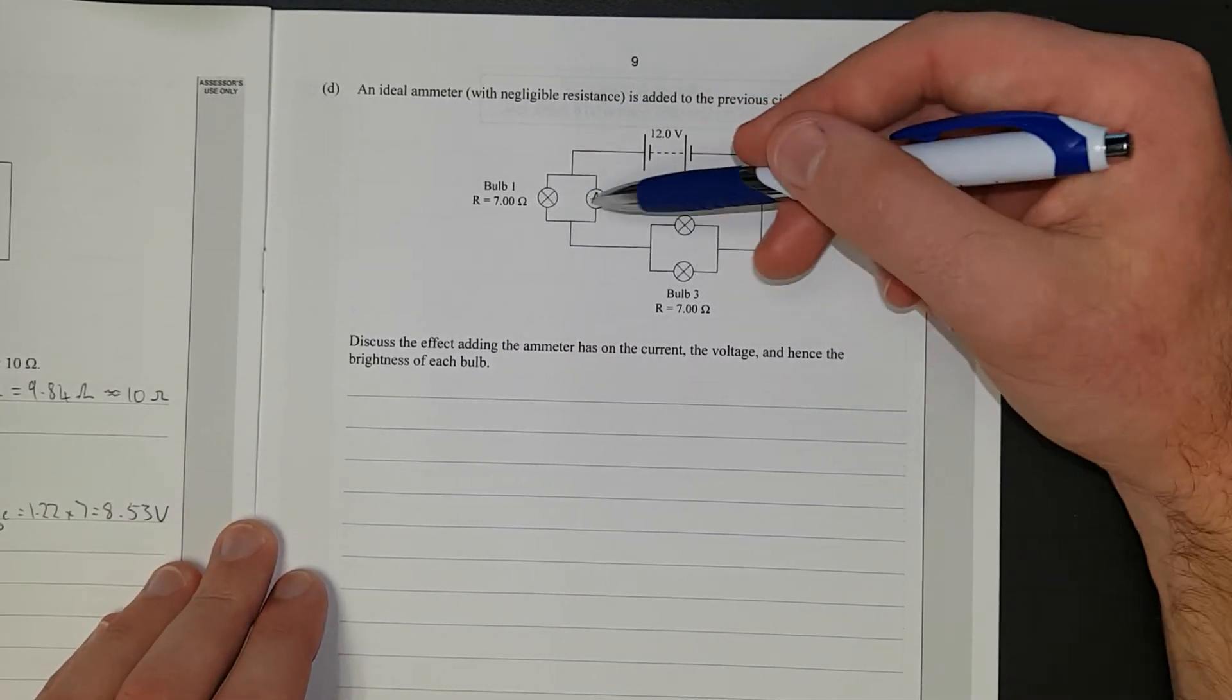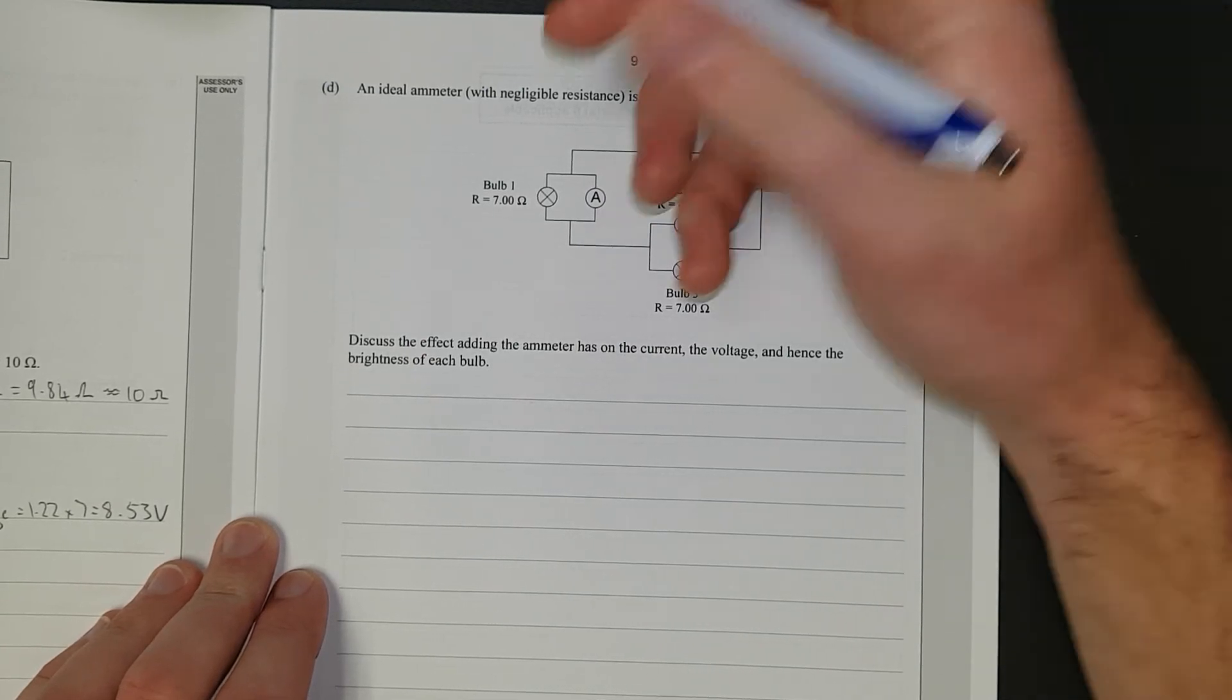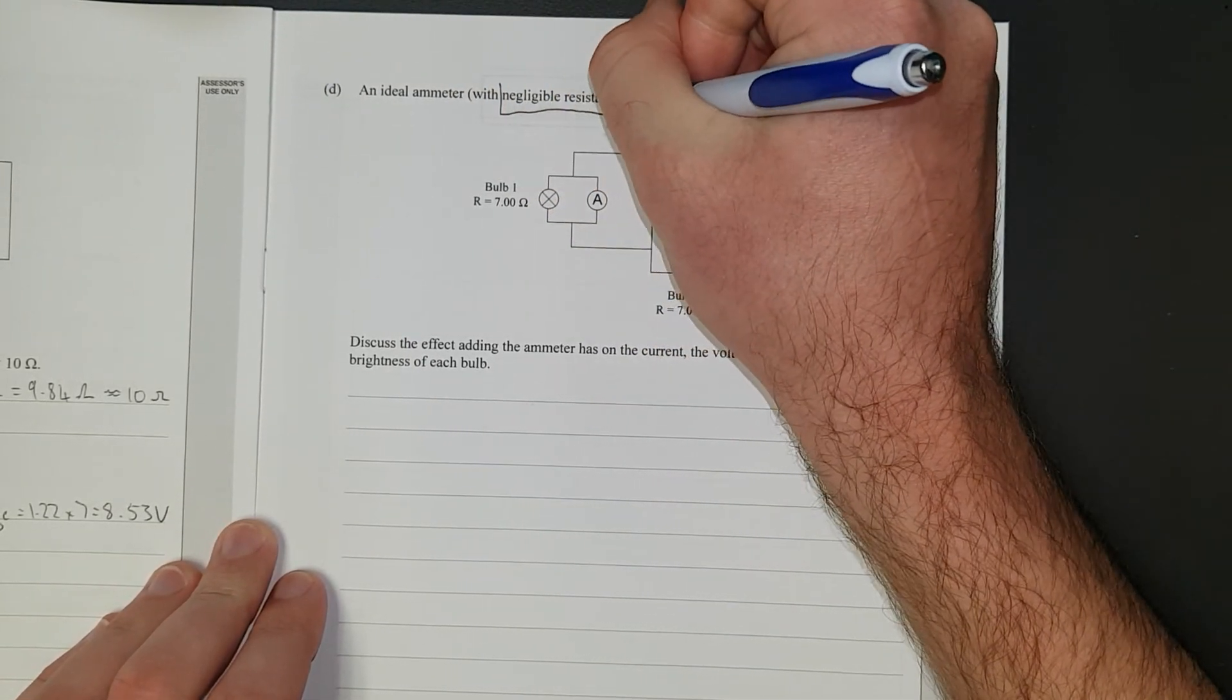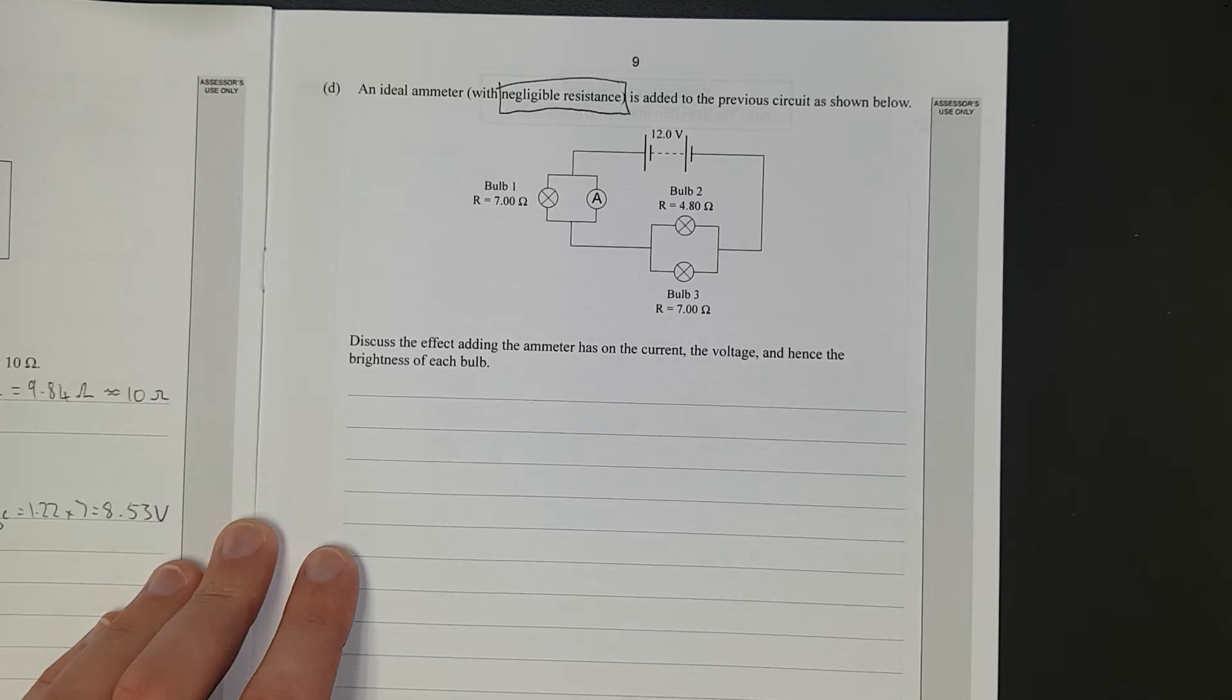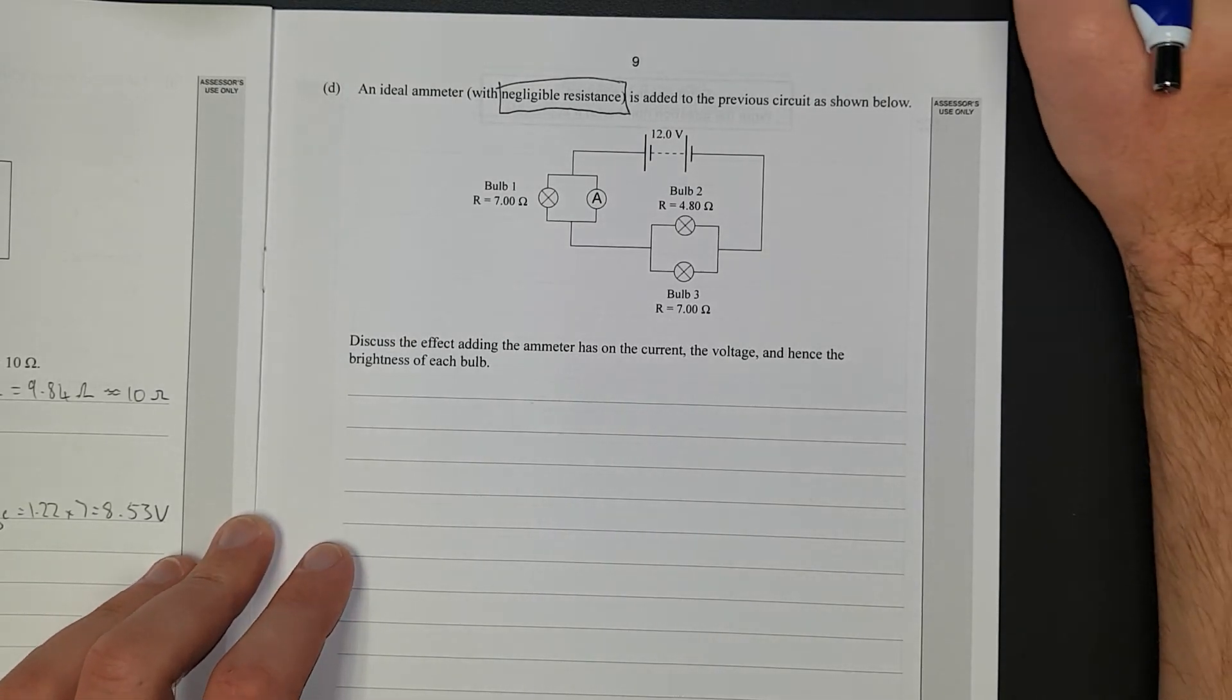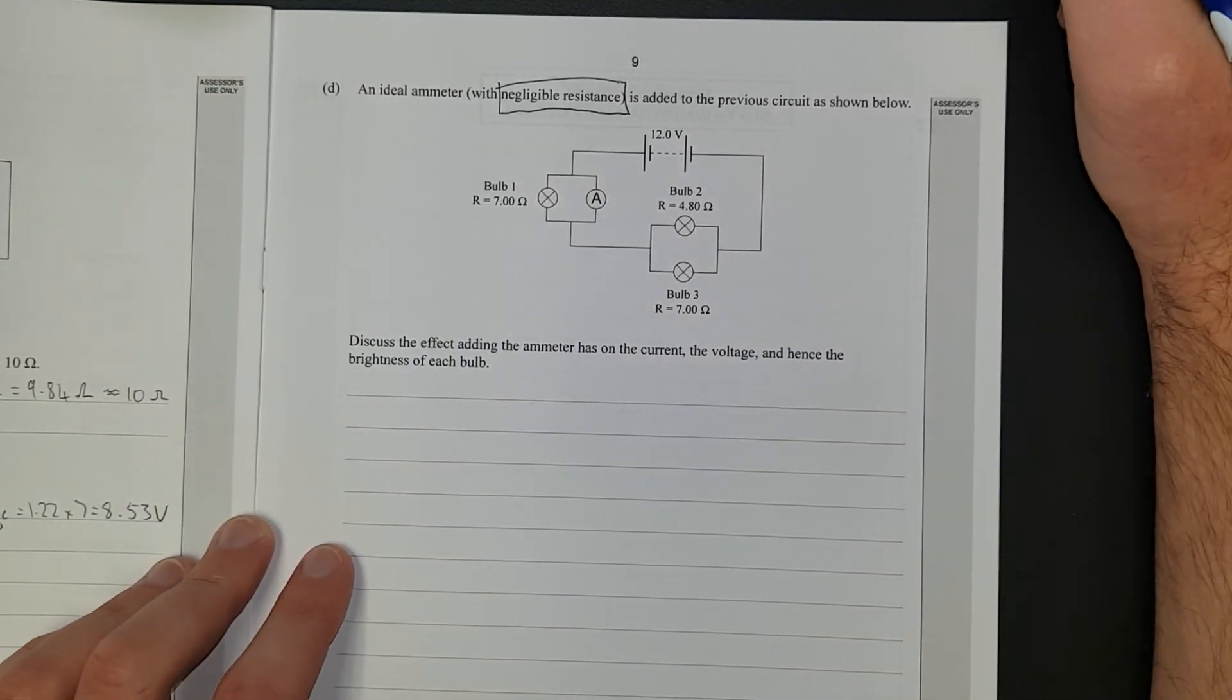Right, an ideal ammeter with negligible resistance is added to the previous circuit below. Discuss the effect adding the ammeter has on the circuit, the voltage, and hence the brightness of each bulb. So if you've done this before in real life, or if you've done this with your physics teacher and they've shown you the life skill of how to use a voltmeter, you should know that measuring voltages 99% of the time is always very safe. You can't stuff it up.